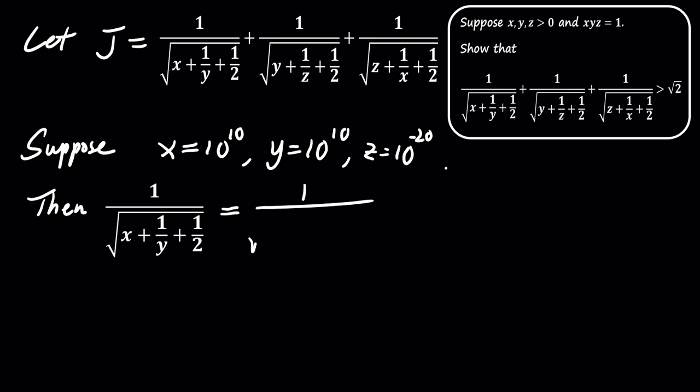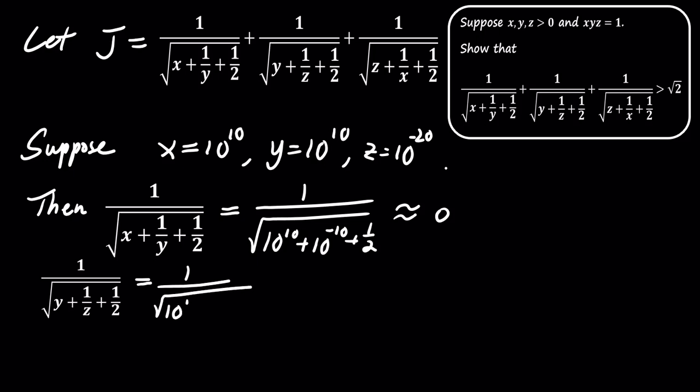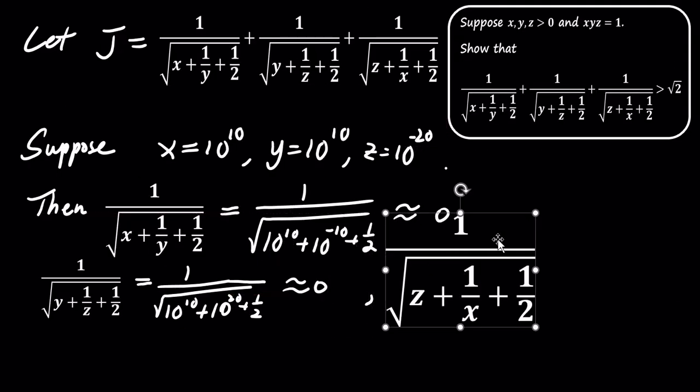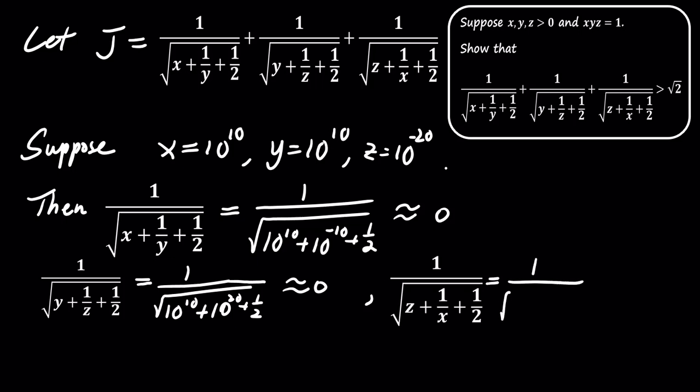For these values, the first term becomes approximately 0 because the square root of 10 to the power of 10 dominates the denominator. The second term also becomes approximately 0 for the same reason. The third term simplifies to the square root of 2.